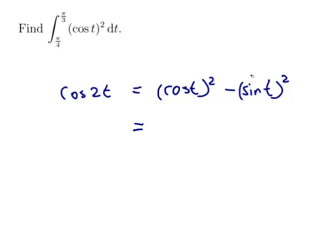The sin squared would be 1 - cos squared. So the minus minus for the cos squared would give me 2 cos²t - 1.